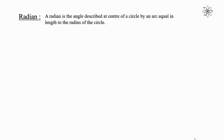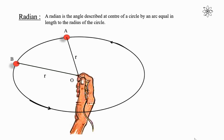In circular motion, angular displacement is measured in radians. A radian is the angle described at the center of a circle by an arc equal in length to the radius of the circle. To understand it, let's consider the object moves from position A to B. The angle described at the center of the circle by an arc S, which is equal to the radius of the circle, is called 1 radian angle.